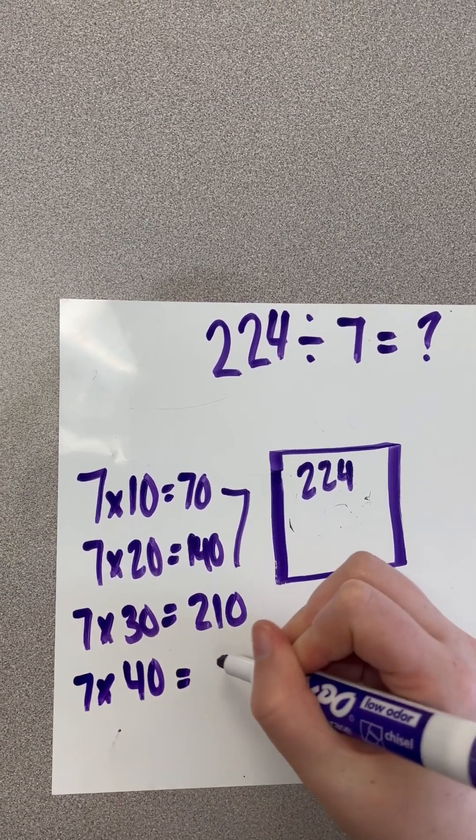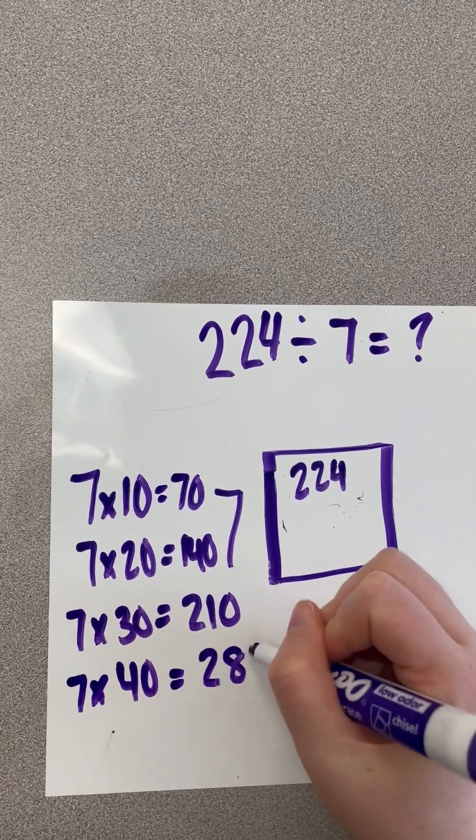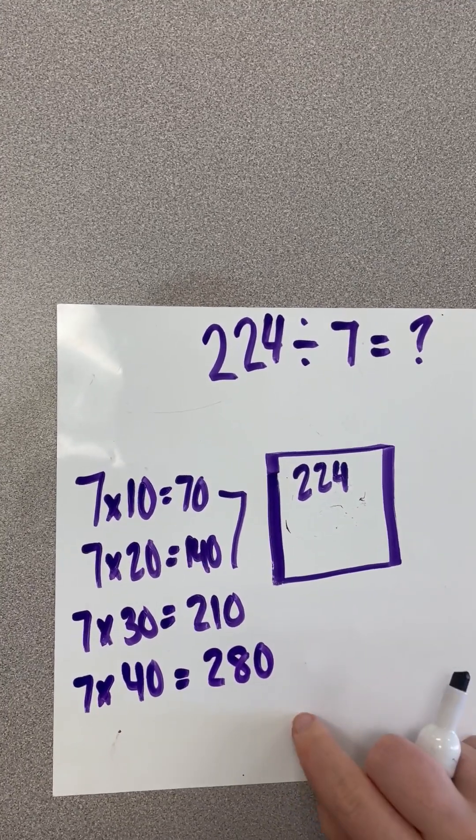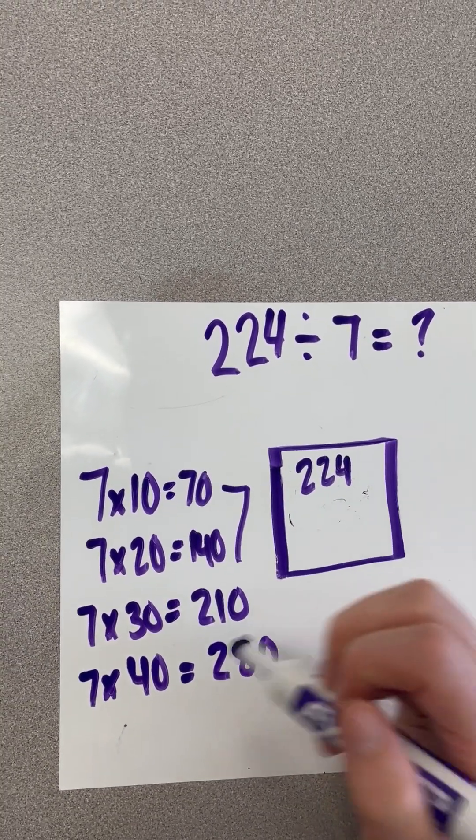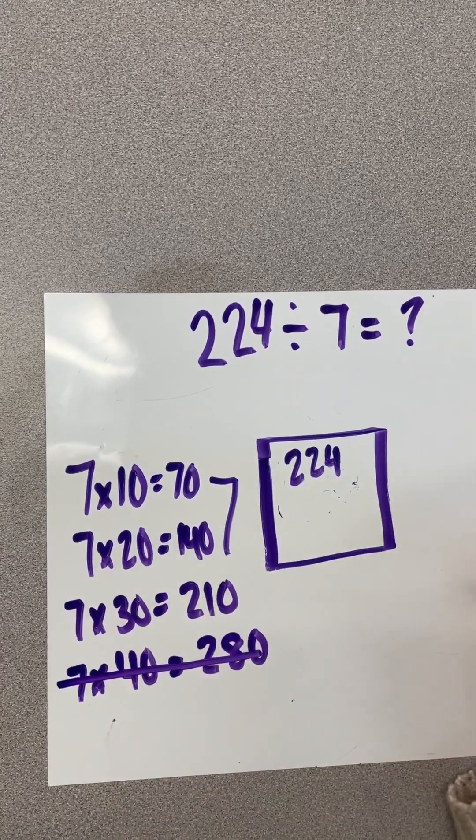So I do 7 times 40, and I get 280. Now this is too much. We only have 224. So we're just going to go ahead and go back to 7 times 30.